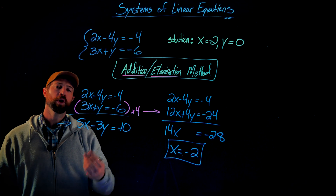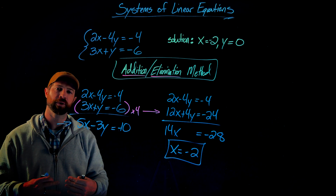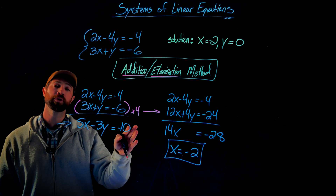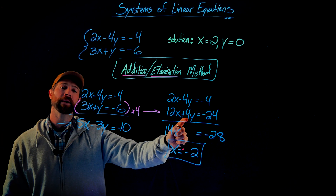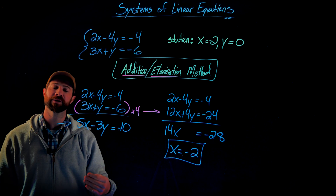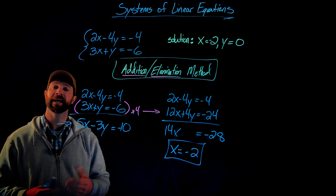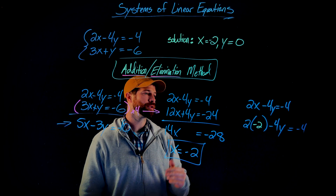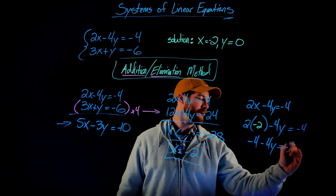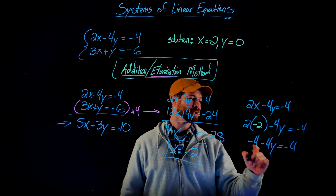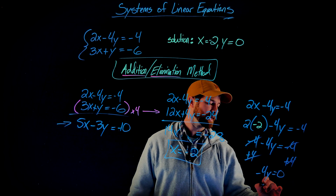This method has two names for a reason. We add the equations together, but it's only useful if we achieve elimination when we do the addition. How we do the elimination is by multiplying one or two equations by values that make the coefficients of one variable opposites, so they cancel out when added. As always, I need to plug my value for x into one of the original equations to find y. Plugging x equals negative 2 into the first equation: negative 4 minus 4y equals negative 4. Adding 4 to both sides gives negative 4y equals 0, and dividing by negative 4 gives y equals 0.